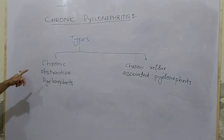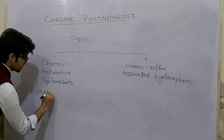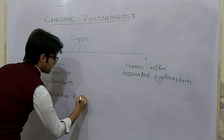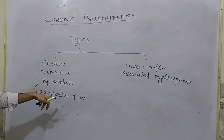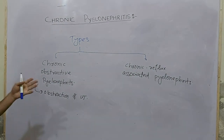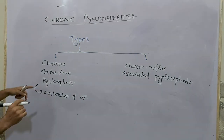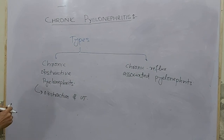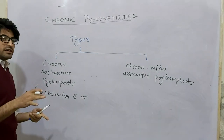Chronic obstructive pyelonephritis is due to obstruction of the urinary tract, which leads to urinary tract infections — either long-standing or recurrent — and that leads to chronic pyelonephritis. So obstruction of the urinary tract causes infections, as we have studied in acute pyelonephritis.